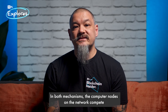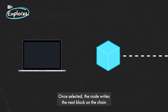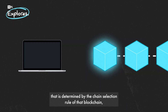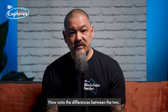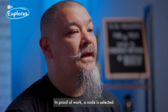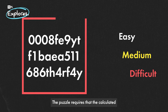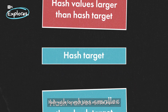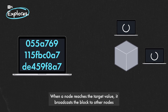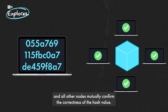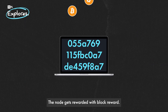Let's start with the similarities. In both mechanisms, the computer nodes on the network compete to be selected for the right to write the next block. Once selected, the node writes the next block on the chain, determined by the chain selection rule of that blockchain, such as the longest chain on Bitcoin and Cardano, and the heaviest chain on Ethereum and Conflux. In proof-of-work, a node is selected to process the next transaction by solving a computational puzzle, sometimes with varying difficulty. The puzzle requires that the calculated hash value for each block must be equal to or smaller than a predetermined value. When a node reaches the target value, it broadcasts the block to other nodes, and all other nodes mutually confirm the correctness of the hash value. If the block is validated, other miners append this new block to their own copy of the blockchain, and the node gets rewarded with the block reward.